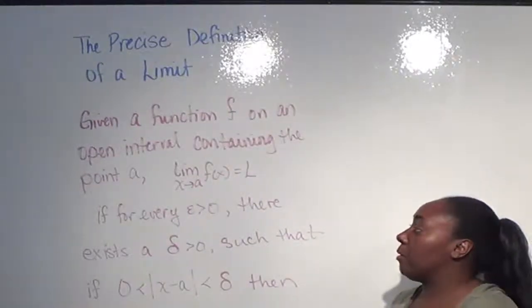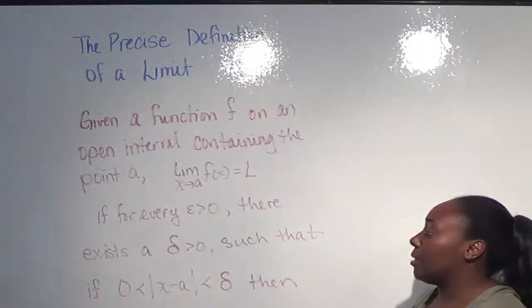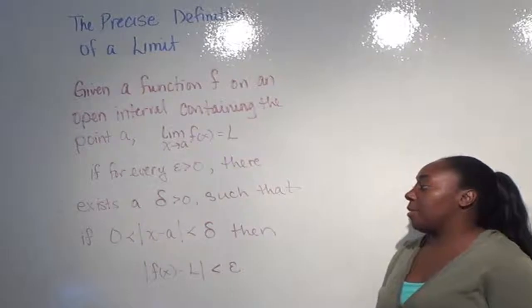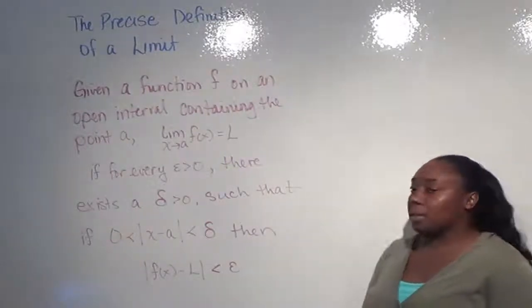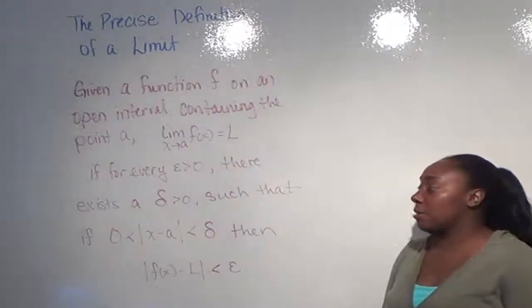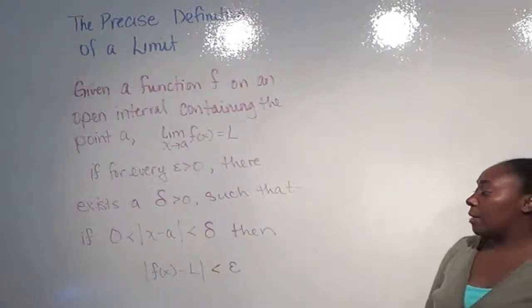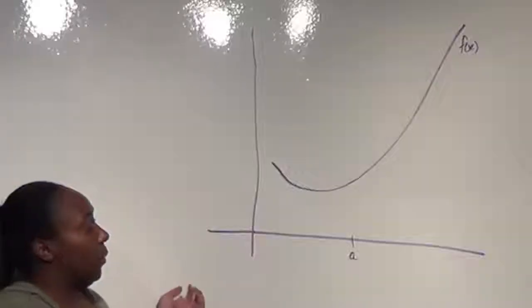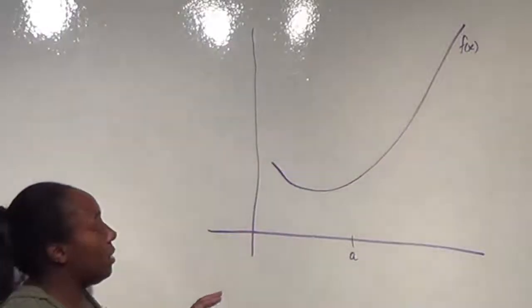for every epsilon greater than 0, there exists a delta greater than 0, such that if 0 is less than the distance between x and a, which is less than delta, then the distance between f(x) and L is less than epsilon.